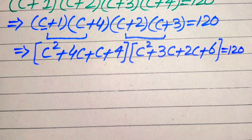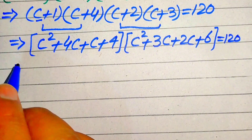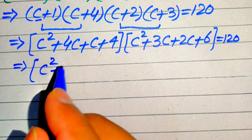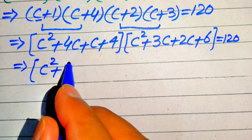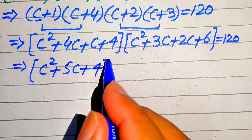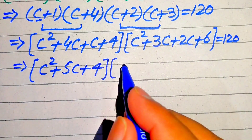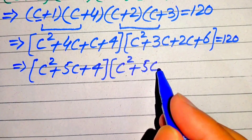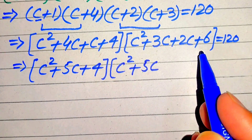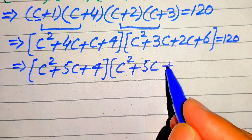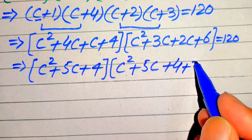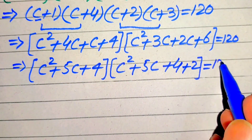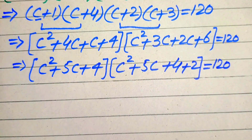In the next step we add or subtract the like terms. We get C² + 4C + C + 4 = C² + 5C + 4, and C² + 3C + 2C + 6 = C² + 5C + 6. We rewrite 6 as 4 + 2, so the equation becomes (C² + 5C + 4)(C² + 5C + 6) = 120.